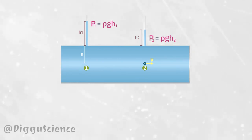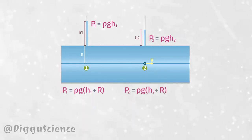Let's assume point one and point two are on the streamline. Then the static pressure at point one is P1 equal to rho g h1 plus r, and the static pressure at point two is P2 equal to rho g h2 plus r.